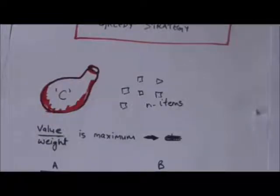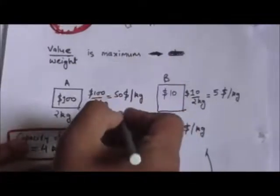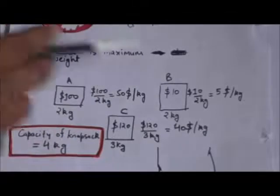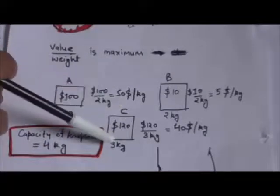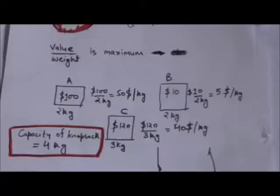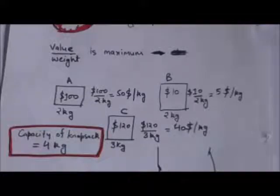Suppose there are three items A, B, and C. Weight of item A is 2 kg and its value is $100. Weight of item B is 2 kg and its value is $10. Weight of item C is 3 kg and its value is $120. The knapsack has a capacity of 4 kg, so we cannot put more than 4 kg. We have to decide which items to put and in what amount to maximize total value.